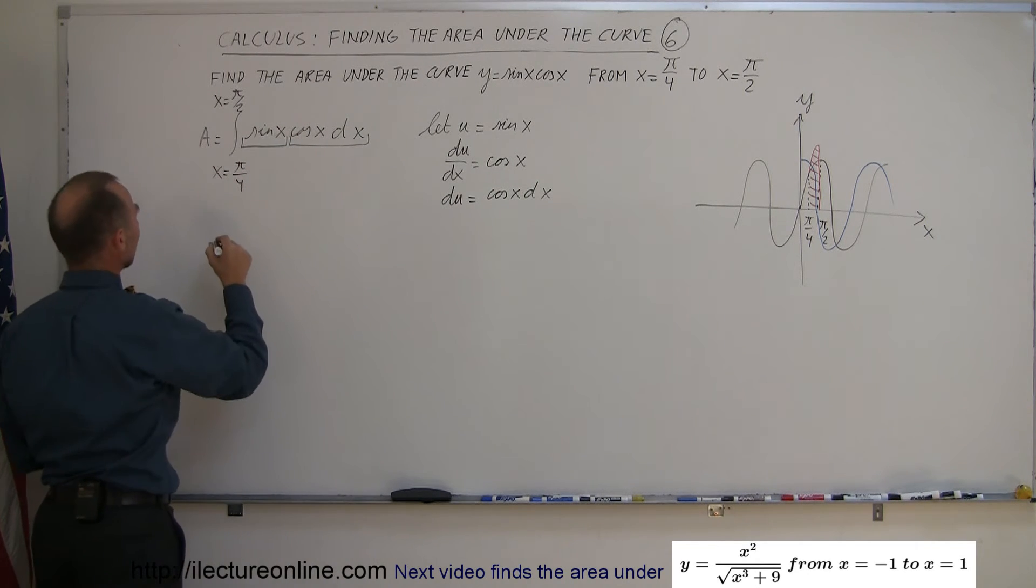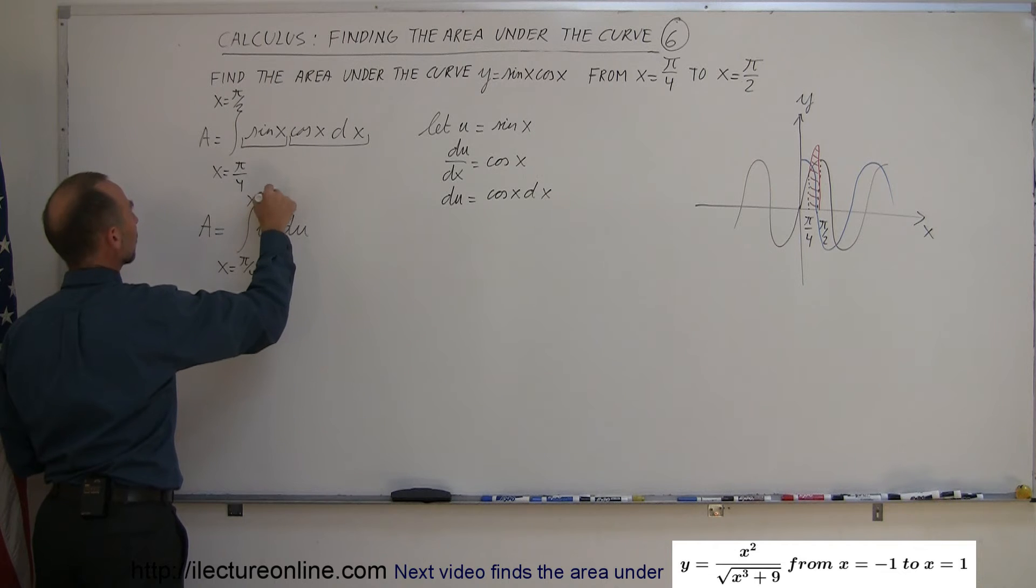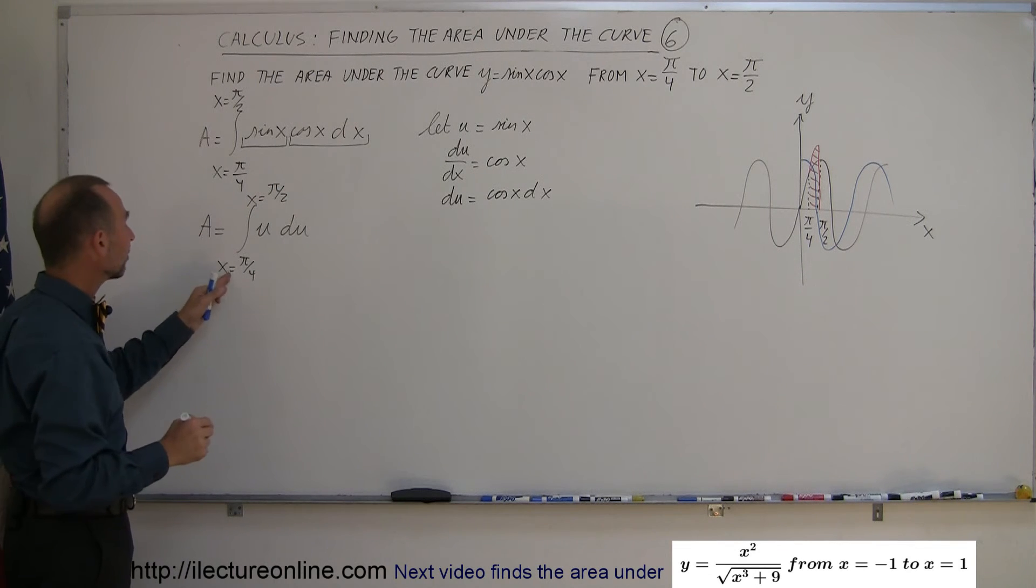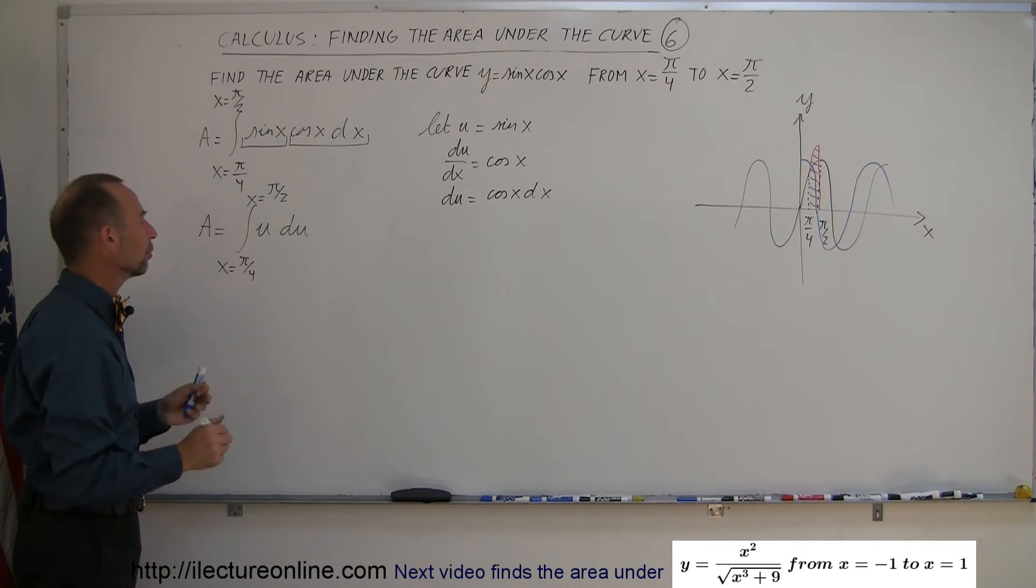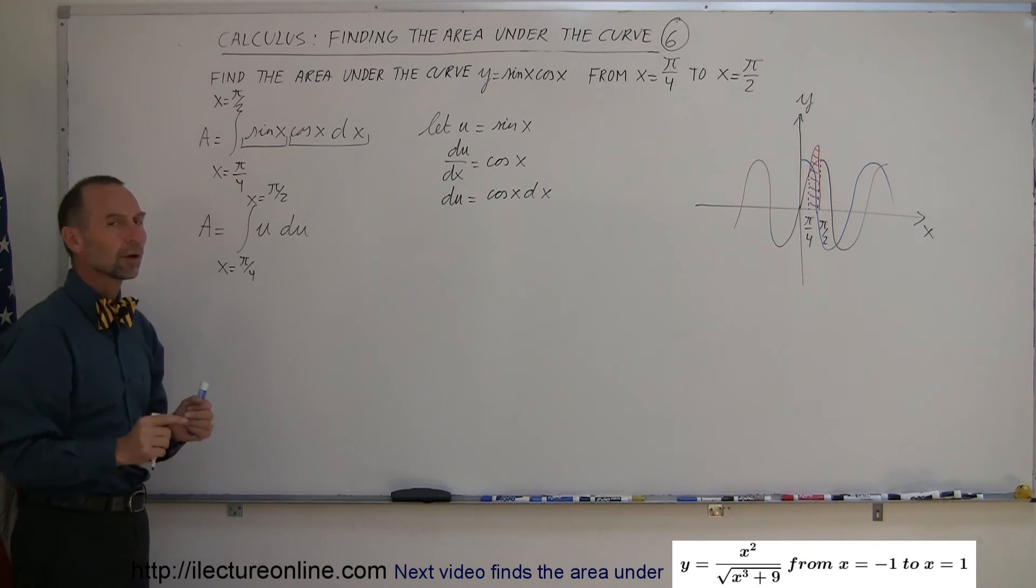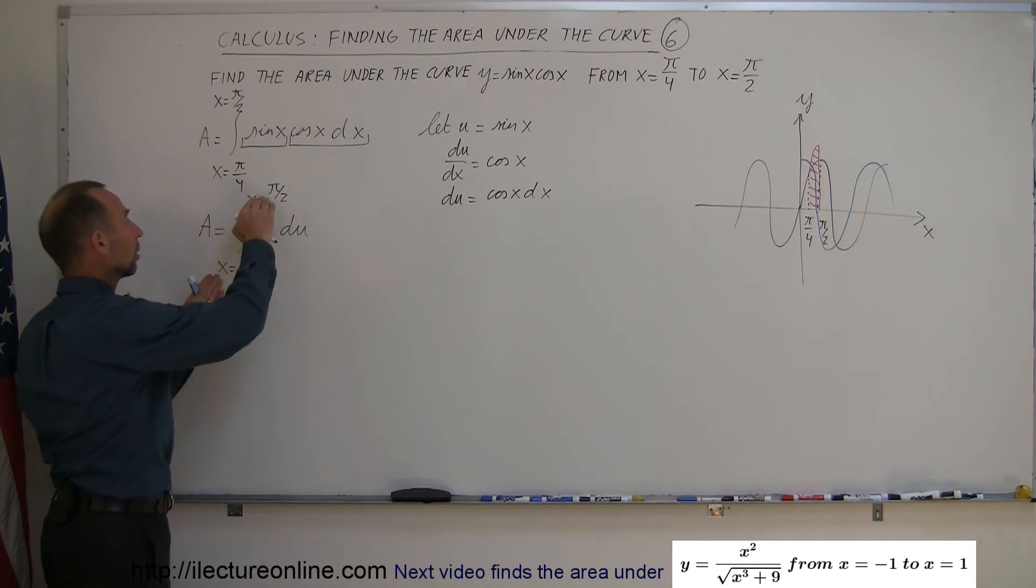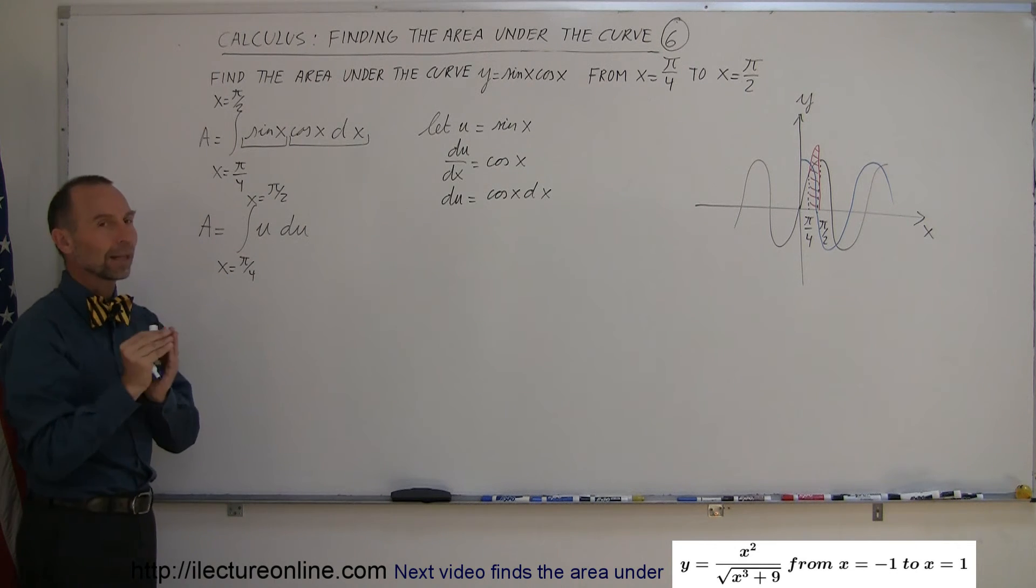If I do that, I get the following integral. A is equal to the integral of u times du with the limits of x equals pi over 4 to x equals pi over 2. Now, notice that I did write the limits are x equals pi over 4 to x equals pi over 2, even though the variable I'm using in my integral are u's. So, once we do the integral, we cannot just blindly plug in the limits because they're not the right limits.